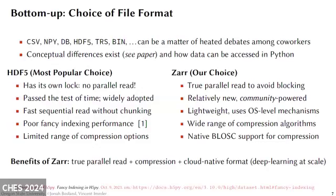There are a lot of file formats out there and it is an understandably hotly debated topic. We cover the conceptual differences in our paper and how they can be accessed in Python. Today I'm presenting two file formats: HDF5, which is the most popular choice for Python frameworks, and XAR, which is SCAR's choice. HDF5 has its own lock, which means you cannot do parallel read. However, it has passed the test of time and is widely adopted due to its fast sequential read without chunking. Unfortunately, HDF5 has poor fancy indexing and a limited range of compression options. XAR has true parallel read to avoid I/O blocking, is relatively new and community powered, lightweight using OS-level mechanisms, and has a wide range of compression algorithms thanks to its native BLOSC support. We chose XAR due to its benefits of true parallel read, compression, and its cloud-native format, which allows for deep learning at scale and clustered computing.